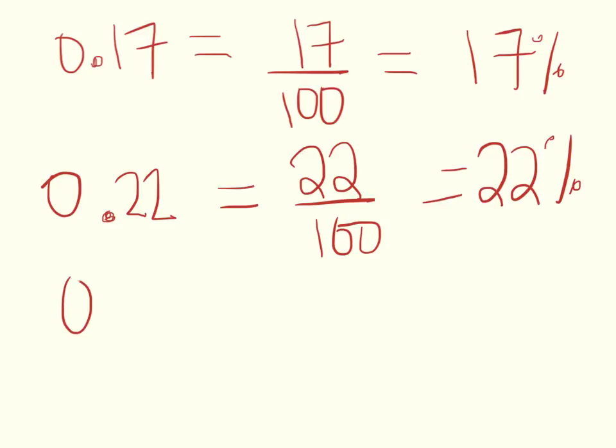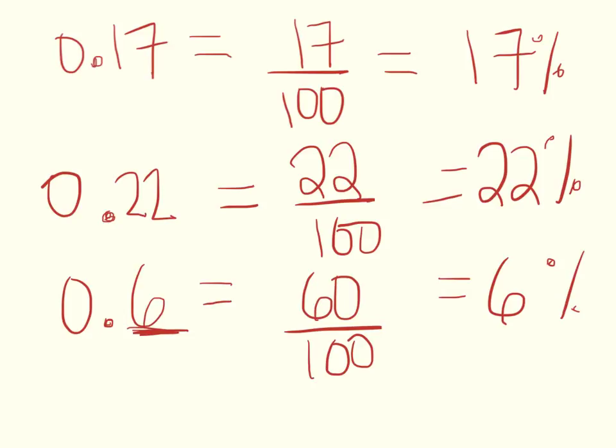Now the tricky part is converting this decimal 0.6. You automatically might think in your mind, oh this is going to be six percent, but you're gonna see that that's wrong. Six goes over 100, but do you see how this is in the tenths place? Tenths place means that that's not really 6 over 100, that's 60 over 100. So 60 over 100 means that this percentage is actually 60 percent. 6 percent looks like this: 6 over 100, and that written as a decimal is 0.06.